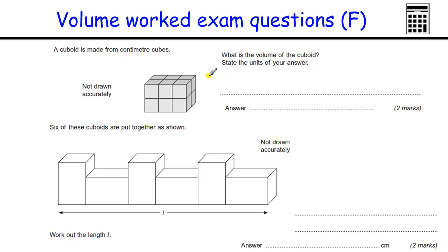Next one. Cube made of centimeters cubed. What's the volume of this cuboid? So, one, two, three, four, five, six on each layer. Two layers. Two times six is 12. State the units of your answer. They are centimeters cubed.